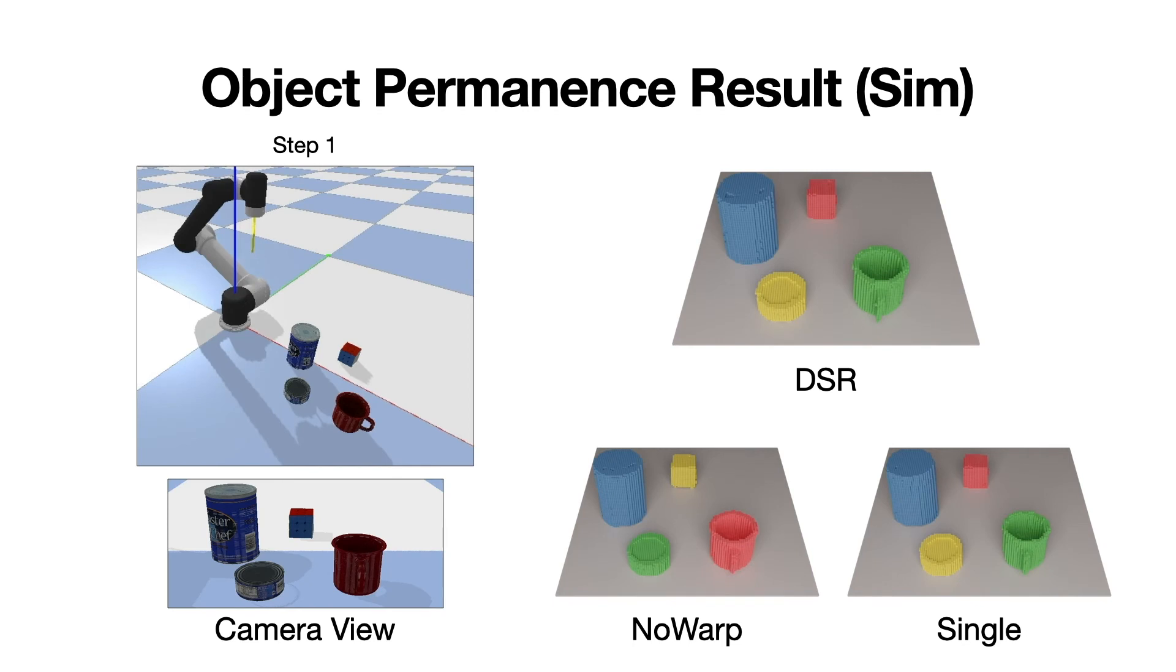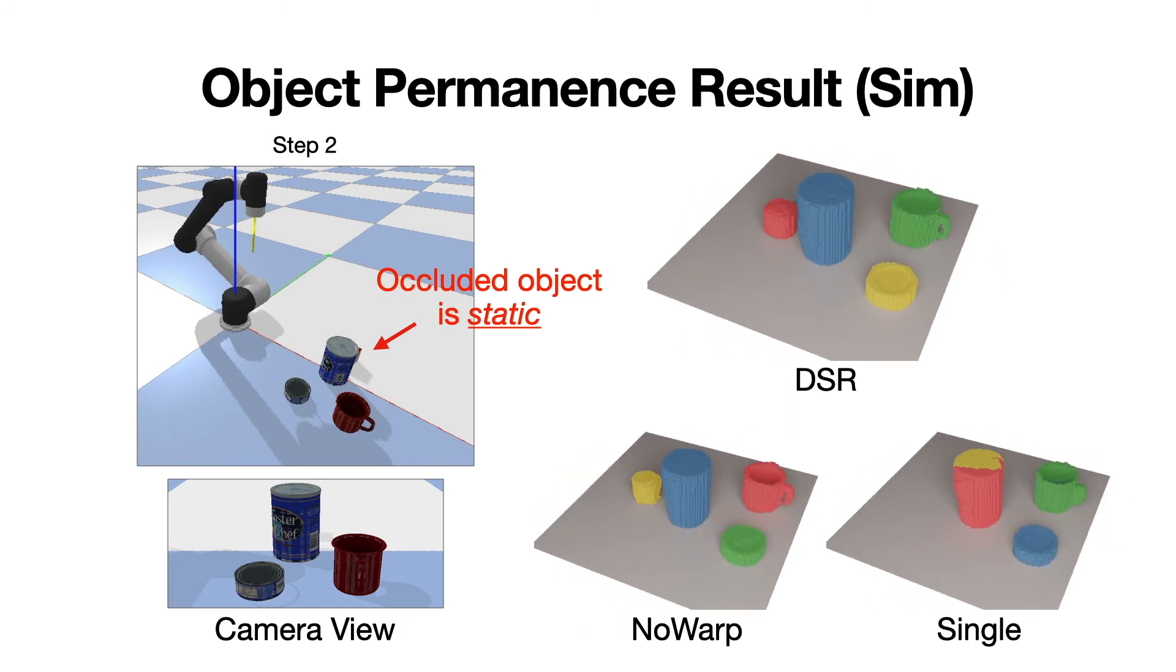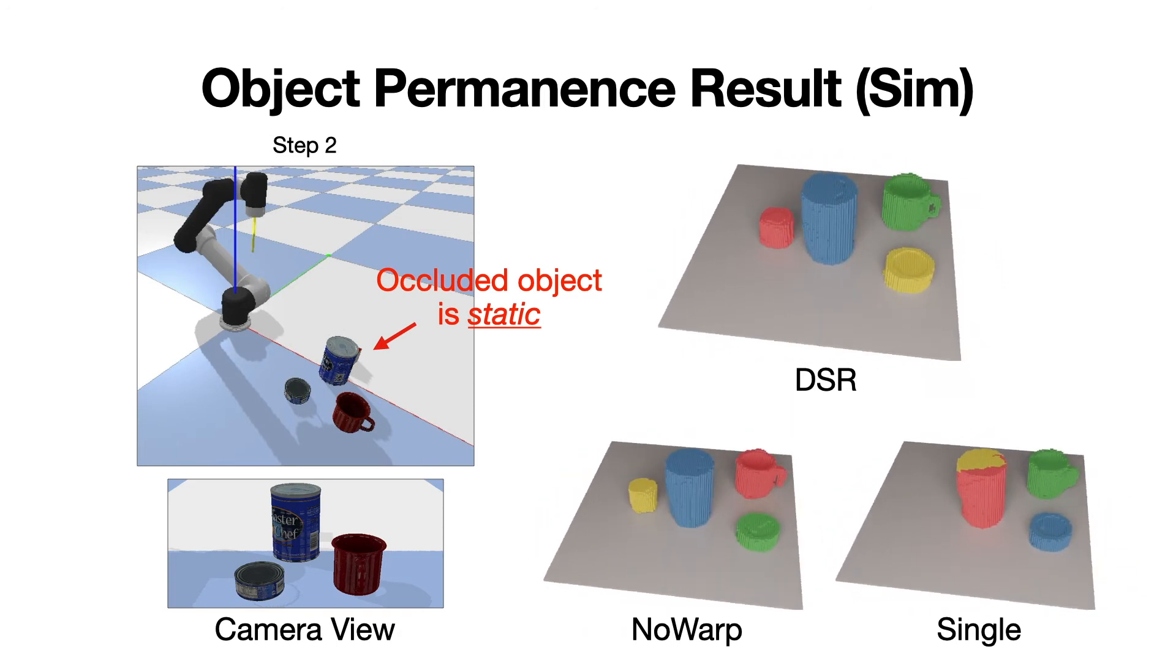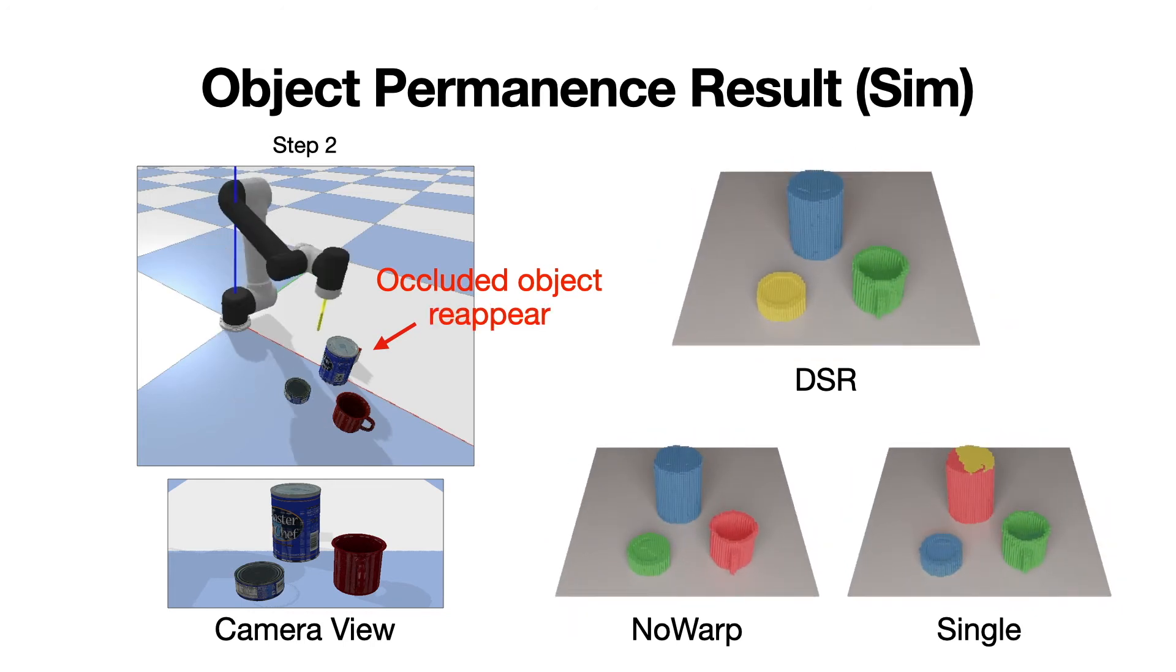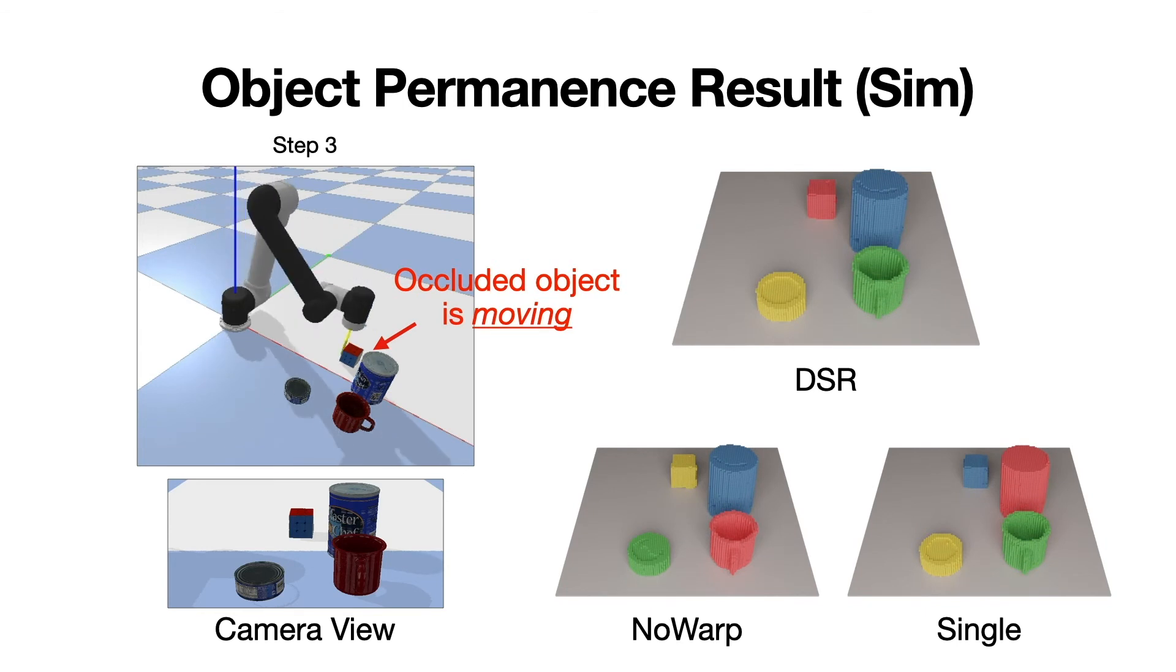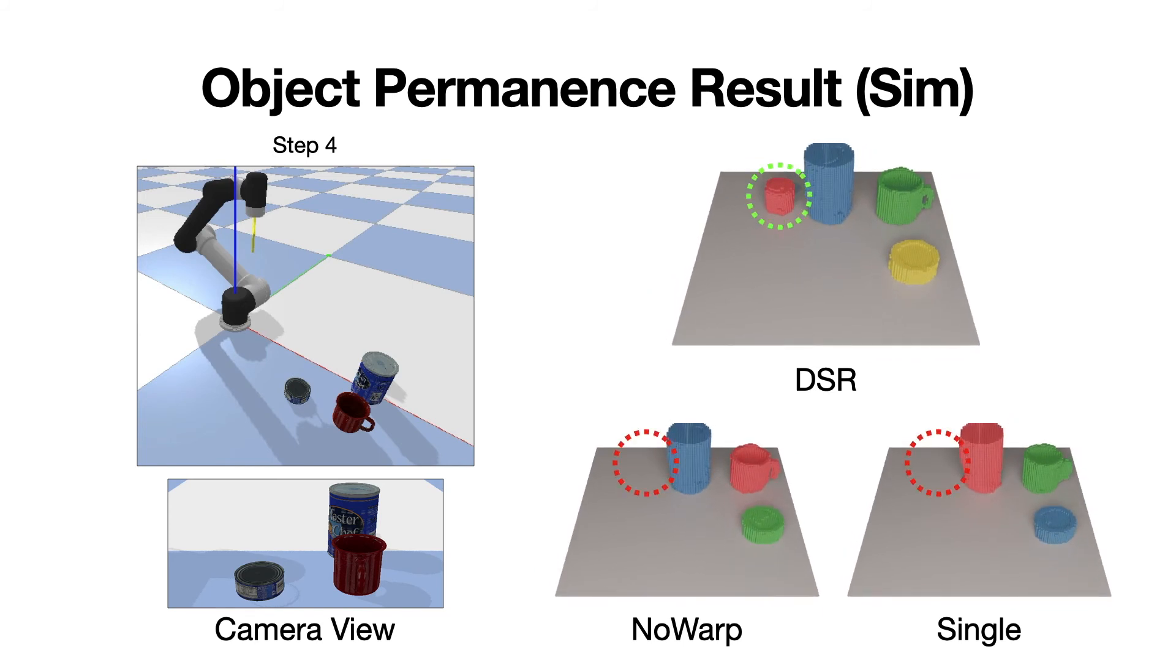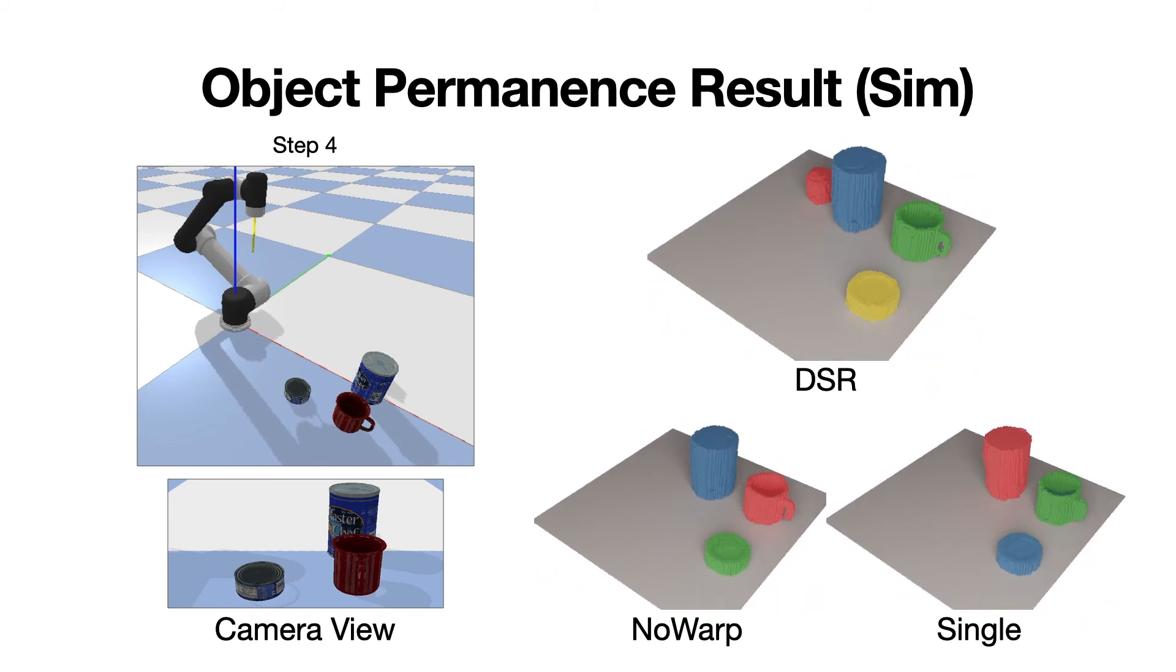In this simulation case, the can is pushed and the static Rubik's cube is occluded. Both our model and the no warp model can handle this case since the history contains the information of the static objects. In this step, the Rubik's cube reappears and is then pushed to hide behind the can. Only our DSR net can handle this dynamic occlusion case. No warp model fails due to the lack of historical motion.